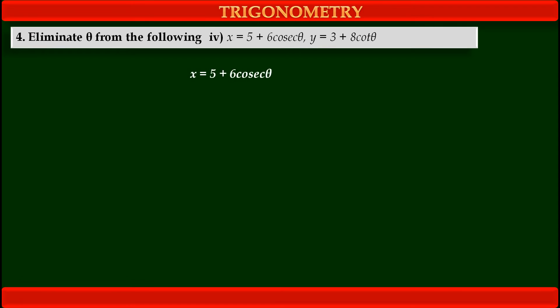In this problem, it is given that x equals 5 plus 6 cosec theta and y equals 3 plus 8 cot theta, and we have to eliminate theta.